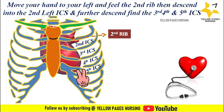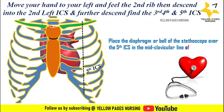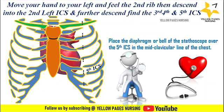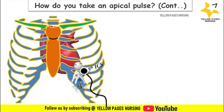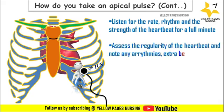Once you have identified the second rib, it will be easy to identify the subsequent ribs. After identifying the fifth intercostal space, place the diaphragm or bell of the stethoscope over the fifth intercostal space in the mid-clavicular line, making sure it is in full contact with the skin. Listen for the rate, rhythm, and strength of the heartbeat for a full minute, and assess the regularity of the heartbeat, noting any arrhythmias, extra beats, or a murmur.